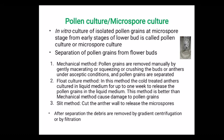The separation of pollen grains from the flower buds is performed by three methods. First is the mechanical method: pollen grains are removed manually by gently macerating, squeezing, or crushing the anthers under aseptic conditions. Second is the float culture method: cold-treated anthers are cultured in liquid medium for up to one week, during which microspores are released into the liquid medium, then collected by centrifugation or sieves. Third is the slit method: anthers are cut at one end, releasing microspores directly into the nutrient medium.